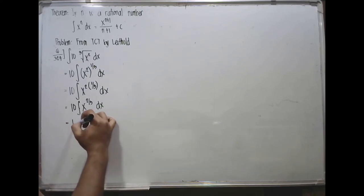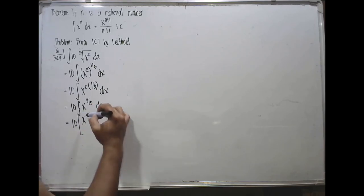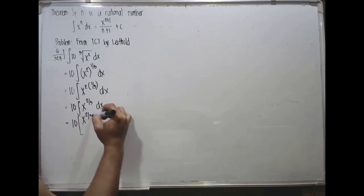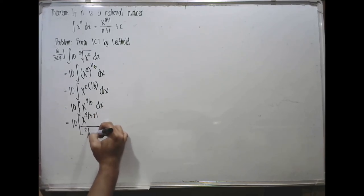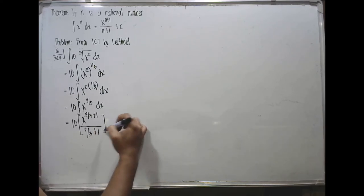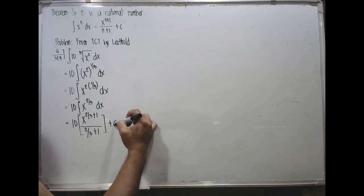Then copy the constant, apply the formula, so you have x raised to 2 thirds plus 1 over 2 thirds plus 1 plus c.